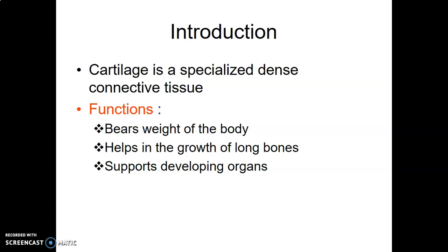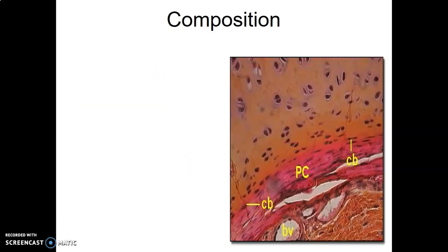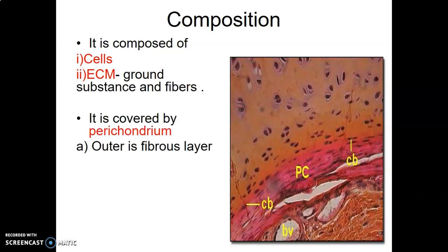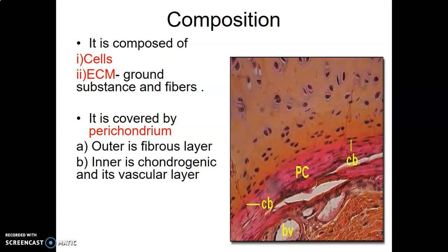We start with cartilage. It's dense connective tissue that is specialized. It helps to bear the weight of the body, helps with the growth of long bones in cases of endochondral ossification, and also helps to support the developing organs. As with any other connective tissue, we have cells and extracellular matrix, and the matrix has ground substance and fiber.